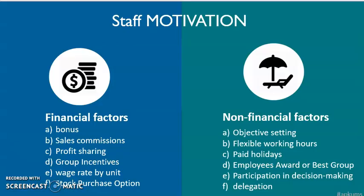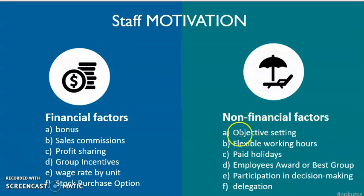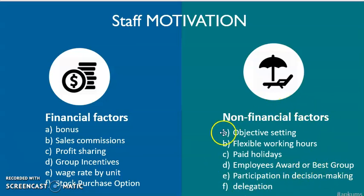Next, we look at staff motivation. There are many ways to motivate workers. There are financial ways — for example, giving them bonus, commission, or profit sharing — but these come with costs. At the same time, we can motivate them using non-financial factors, such as setting objectives, determining flexible working hours, giving paid holidays, giving appraisal and awards, and allowing them to participate in decision making and delegation. Non-financial factors might work better for certain types of workers, so we have to determine what type of factors to use at a certain period of time, as non-financial factors may be effective at some times but financial factors may also be needed.